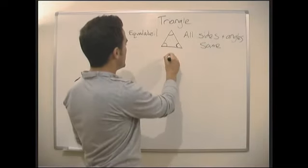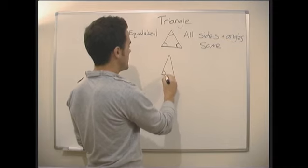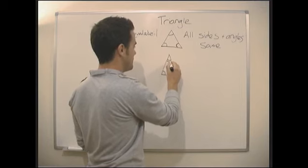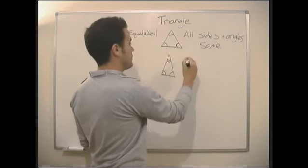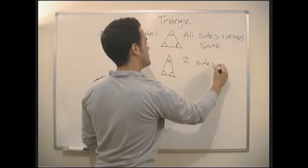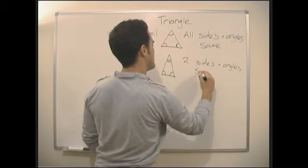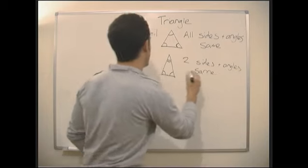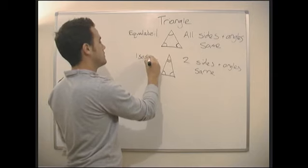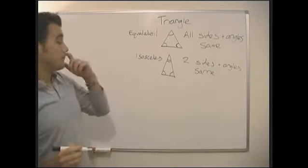Right, the next one we've got. We've got two sides the same, two angles the same. So those angles are the same, that angle's different. Okay, so now we've got two sides and angles the same. Okay, and this we call an isosceles triangle.